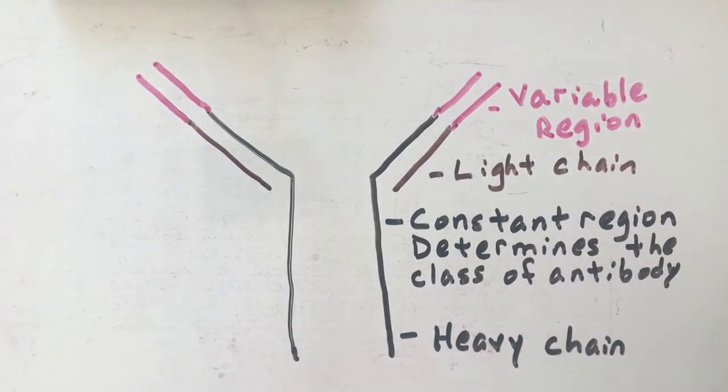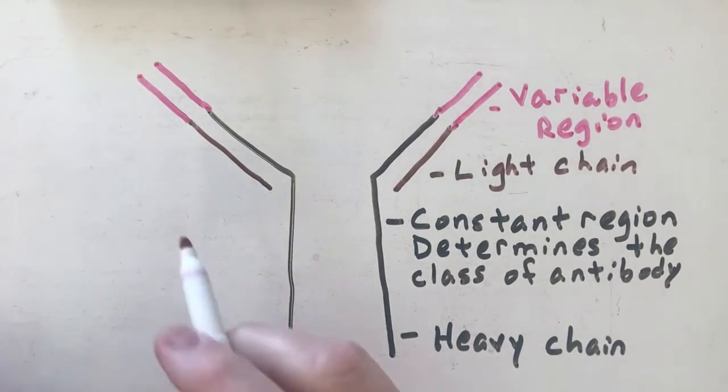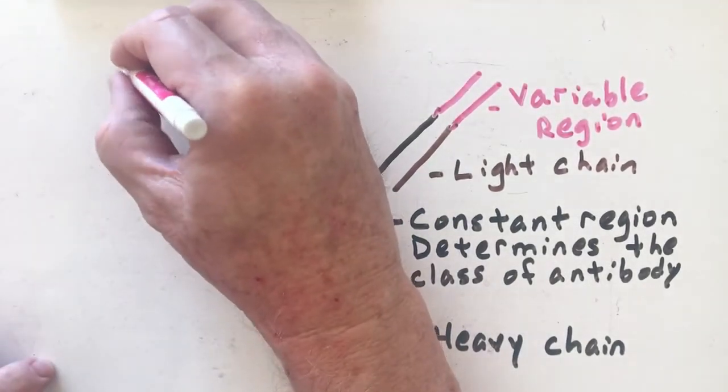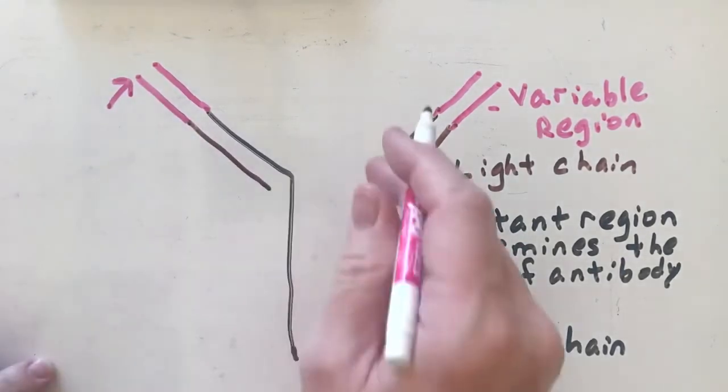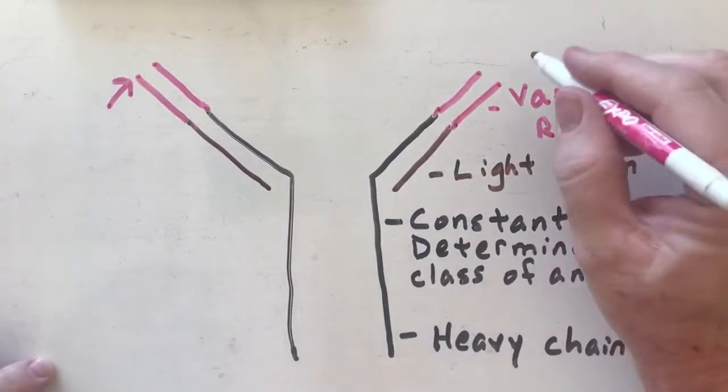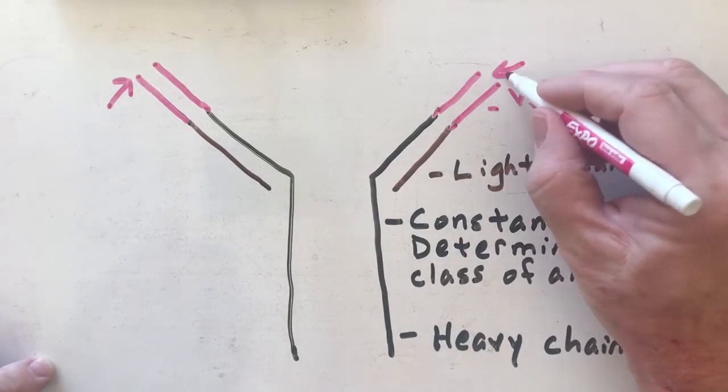Now here's what happens when you have an antigen come in. Oh, I'm sorry, let's finish describing this. Up here is called the antigen binding site. This is on the top of each variable region—this is going to be my antigen binding site.